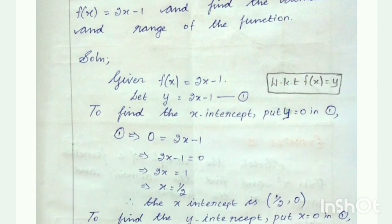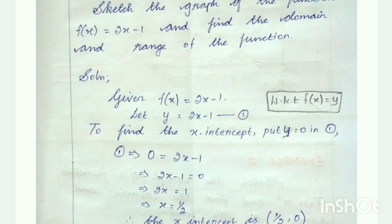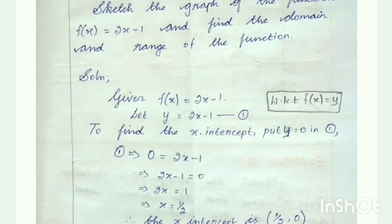In the solution, we first write the given data. What is given: f of x value is given. Given that f of x equal to 2x minus 1. Then we have to consider f of x as y. We already know that f of x equal to y. So in the first line, in the given value, we replace f of x with y. The equation becomes: let y is equal to 2x minus 1.